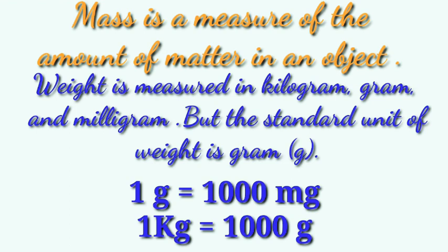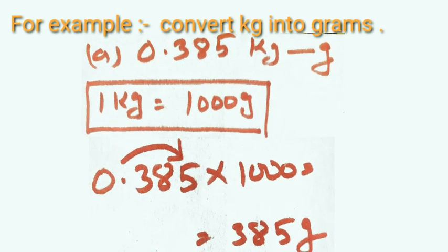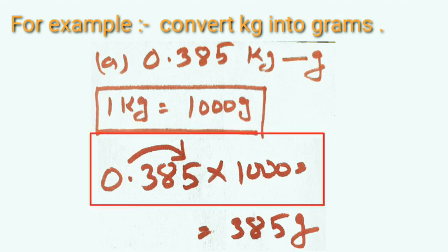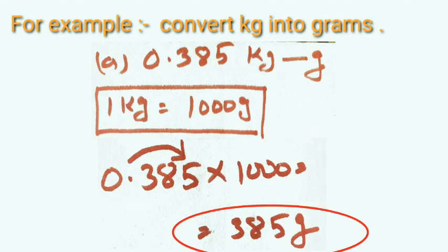Same method applies: if we go from bigger to smaller unit, we multiply; if we go from smaller to bigger unit, we divide. For example, 0.385 kilograms — convert into grams. 1 kg equals 1000 grams, so multiply by 1000. The decimal shifts 3 places ahead, giving 385.0 grams. So the answer is 385 grams.